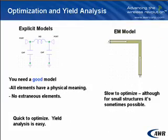If we go to the field of optimization, traditionally the explicit models have a huge advantage. They optimize very well — there are few parameters, and once you've optimized, if you understand the physics of the model, you can very quickly go to your layout and get what you want.